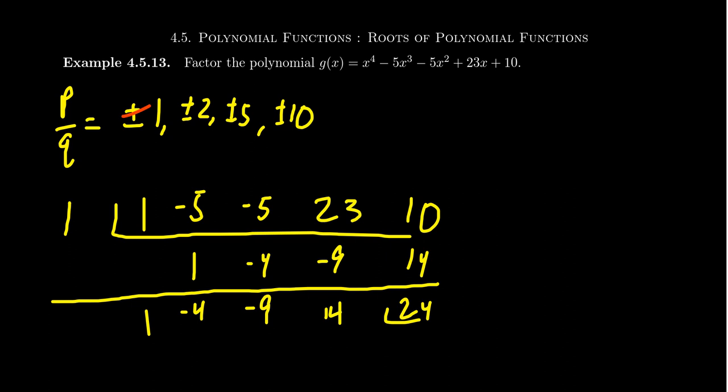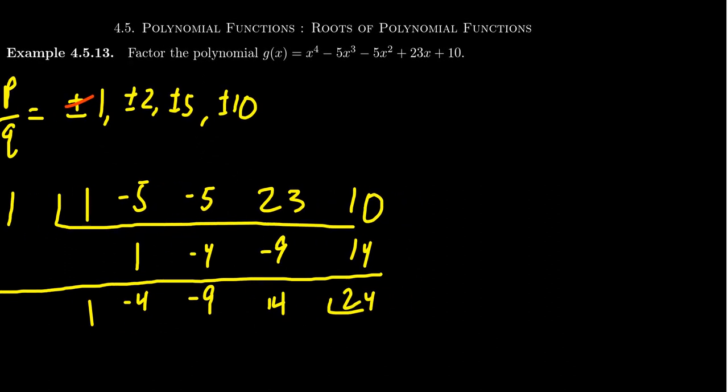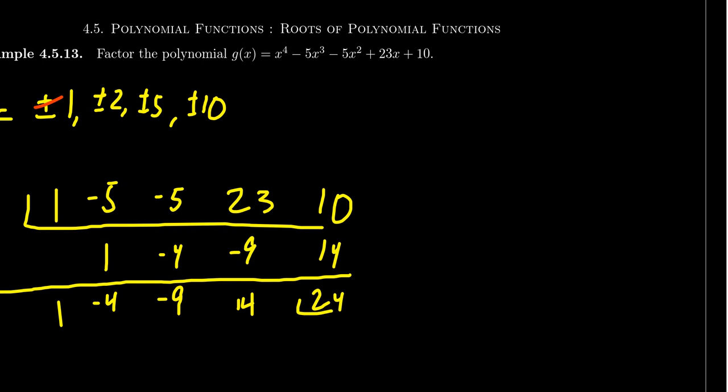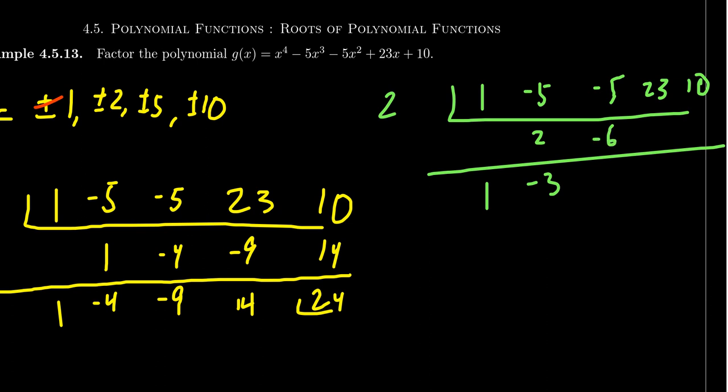We could try 2. 2 seems like a good choice. Let's put it over here. So if we try 2, same numbers as before: 1, -5, -5, 23, and 10. So we bring down the 1. 1 times 2 is 2. -5 is -3. Times 2 is -6. -5 is -11. Times 2 is -22. Plus 23 is 1. Really close. But then 1 times 2 is 2. Plus 10 is 12. So that didn't quite work either. So we want to take +2 off the list. Don't make sure we don't take off -2 because that's a possibility.